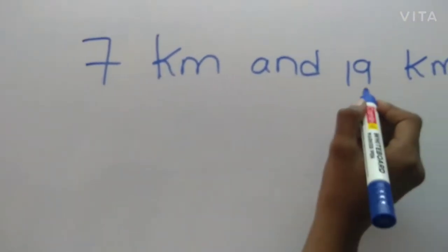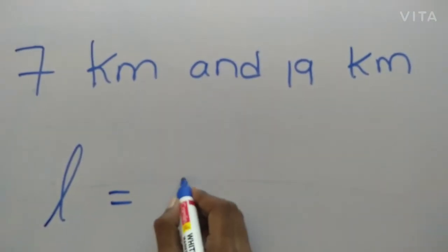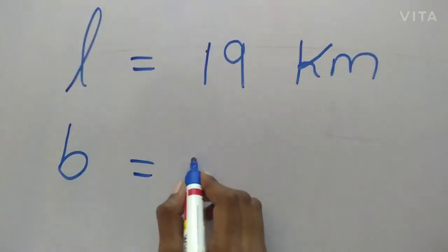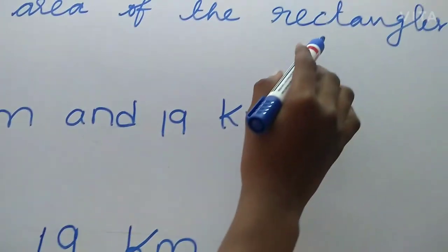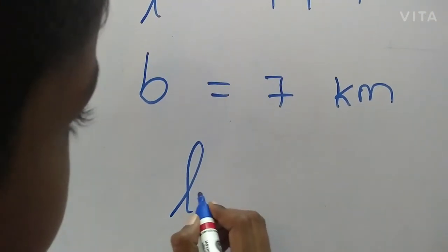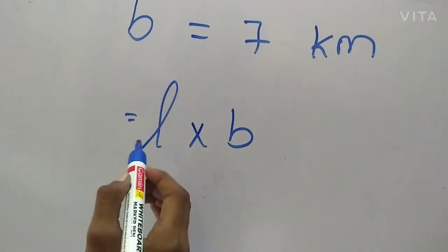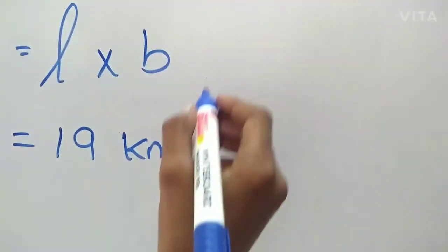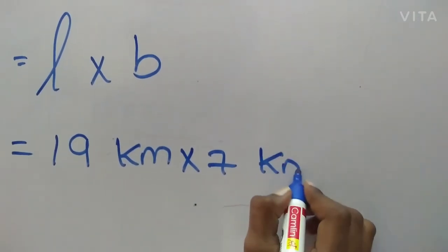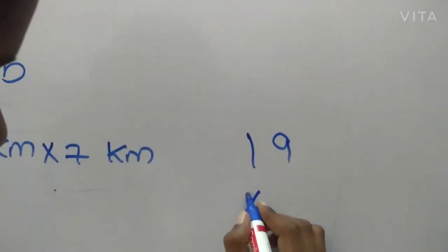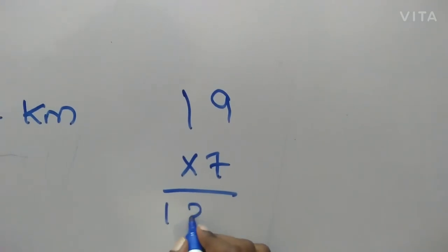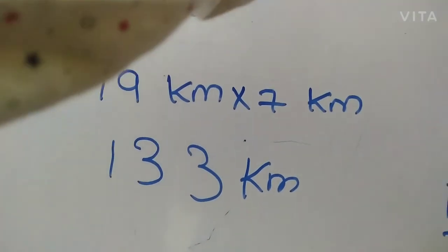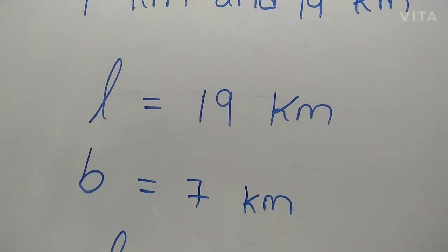What is the length here? Length is equal to 19 kilometers. And breadth? 7 kilometers. What is the area of rectangle formula? Length into breadth. So, length is 19 kilometers into breadth 7 kilometers. Multiply 19 into 7 — 133 kilometers is the area of the rectangle for 7 kilometers and 19 kilometers.